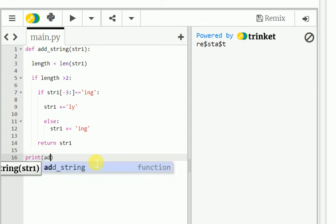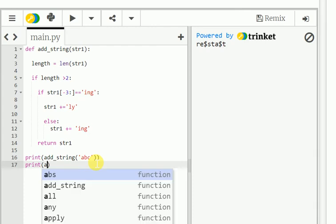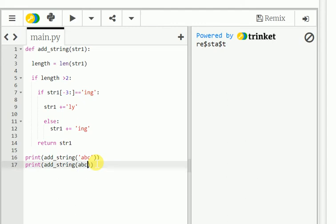Return str1. print add_string('abc'), print add_string('abc'), print add_string('string'). Now we will run the program.